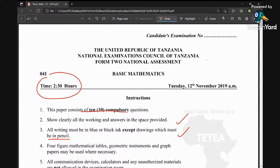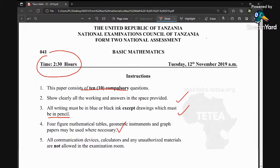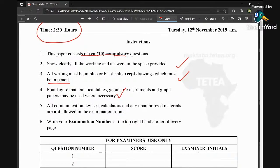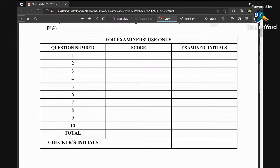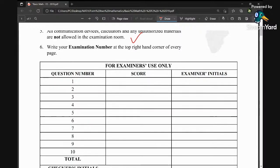Four figure mathematical tables, geometric instruments, and graph papers may be used where necessary. All communication devices, calculators, and any unauthorized materials are not allowed in the examination room. This is the place for examiners.